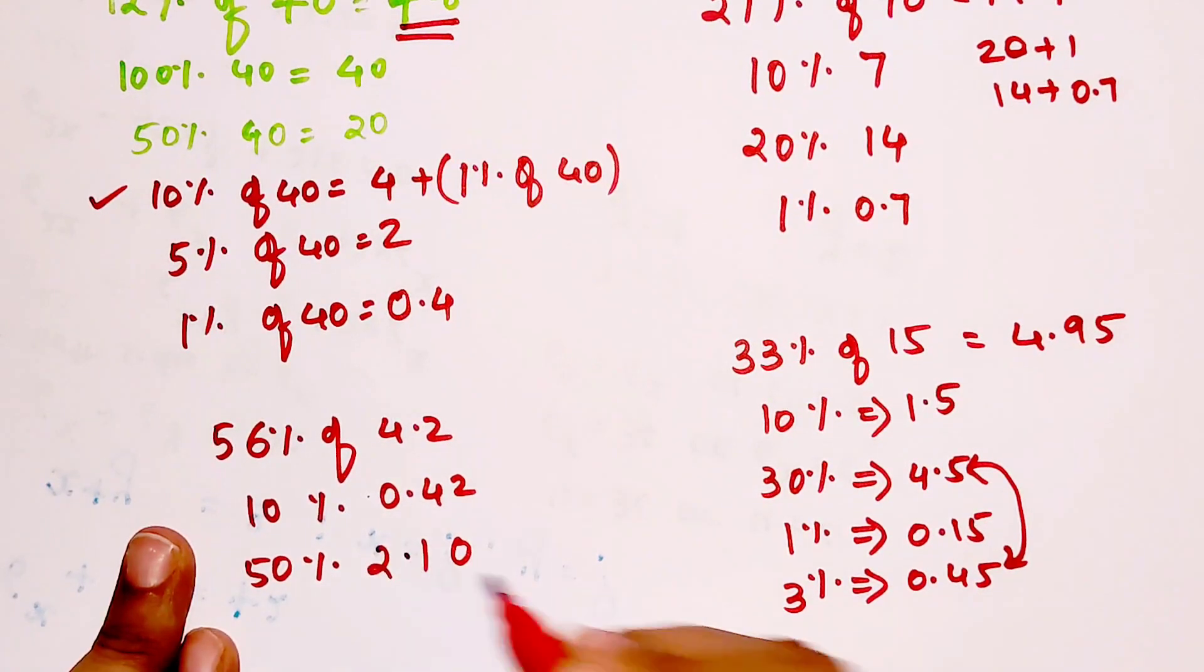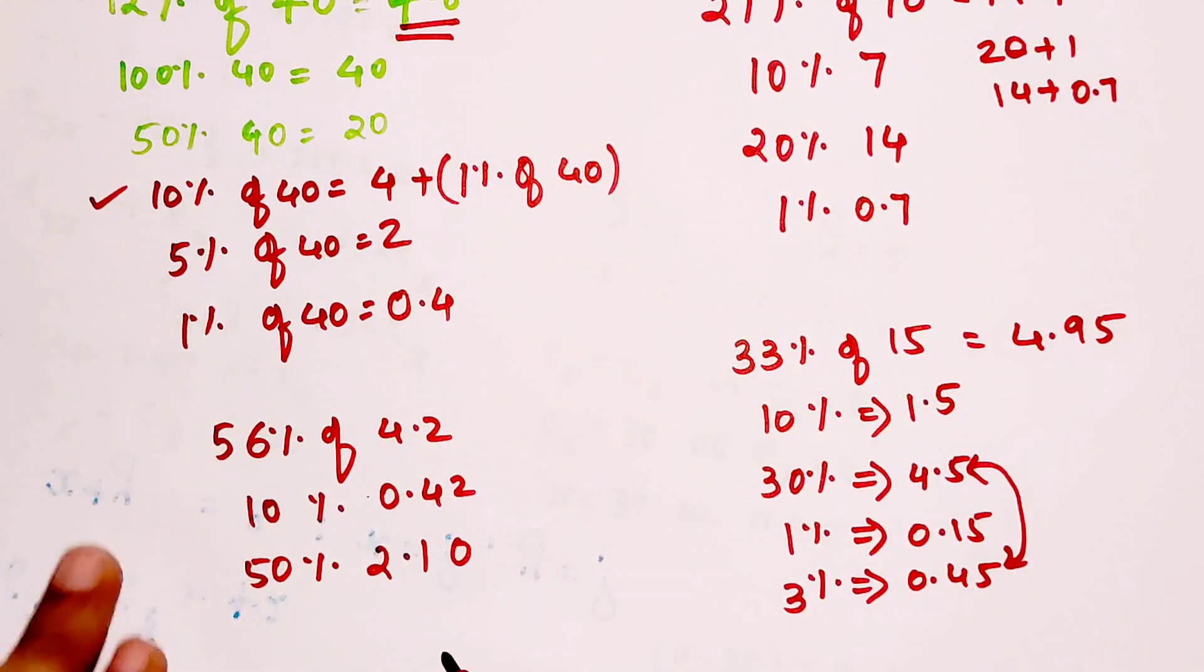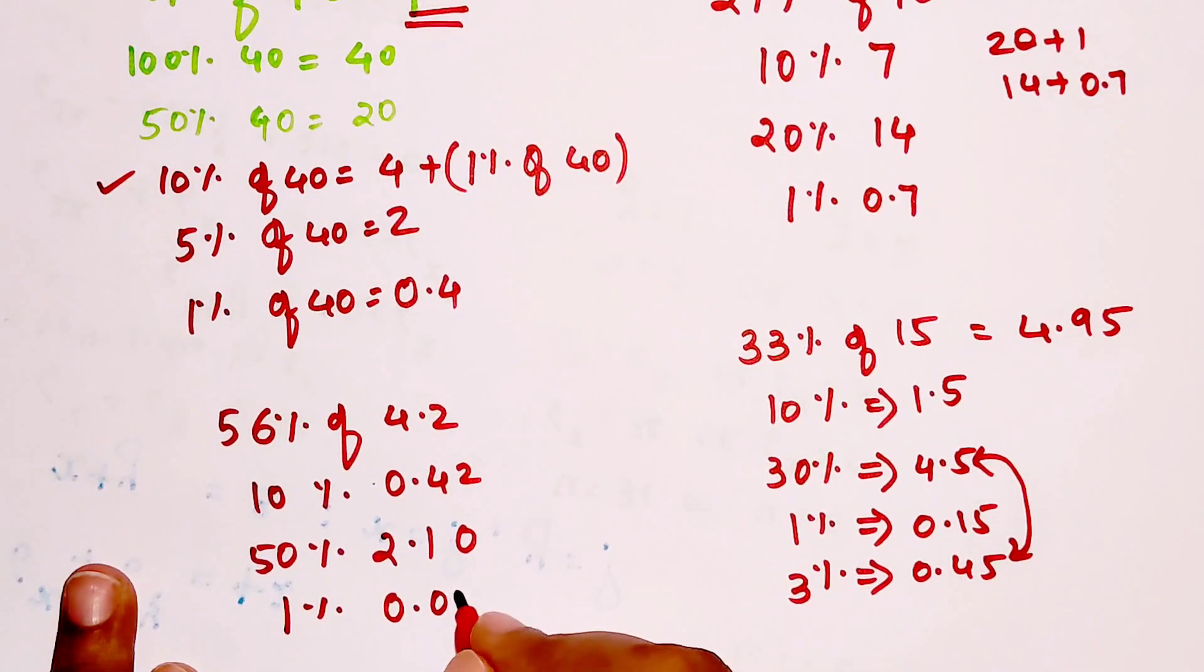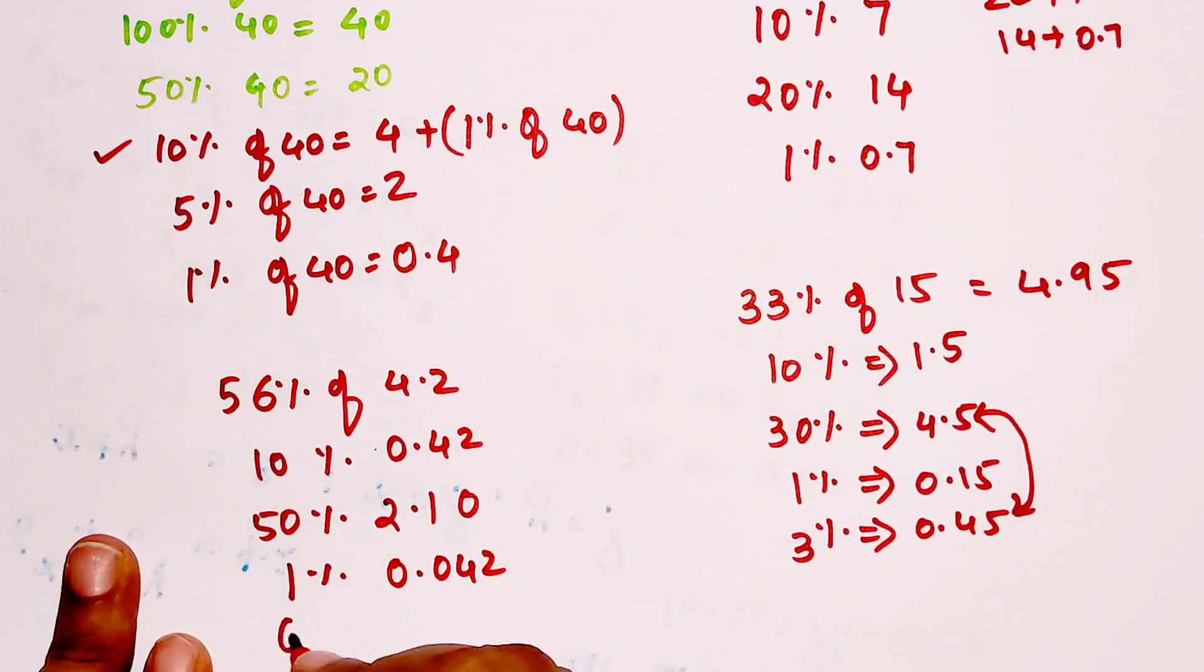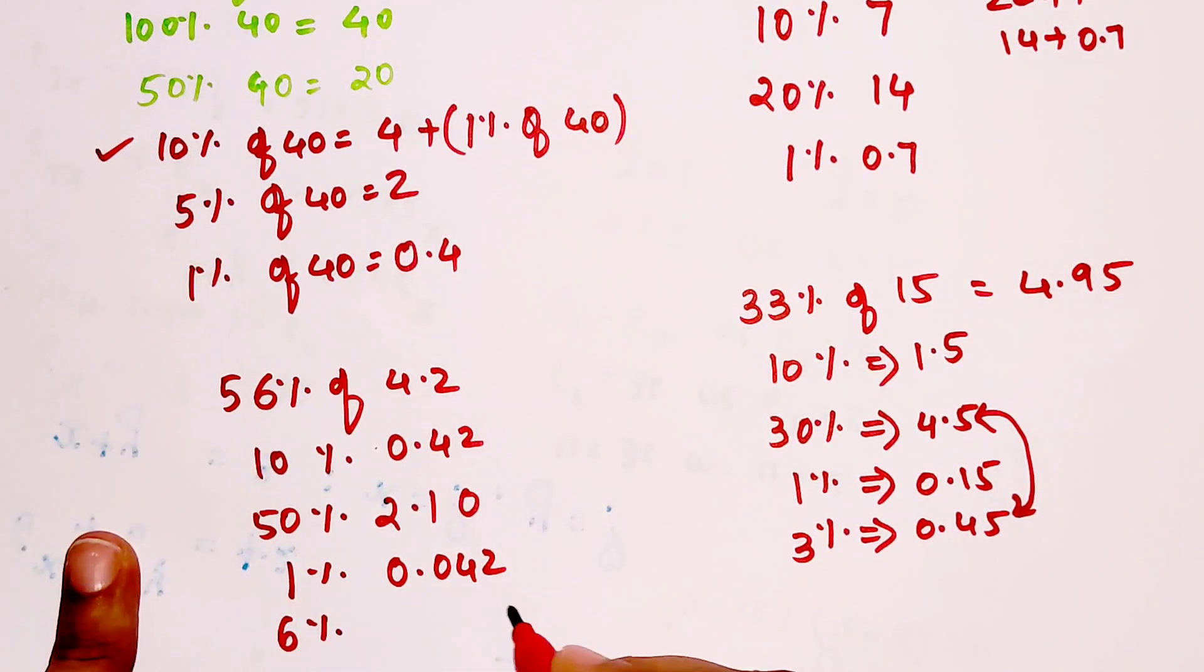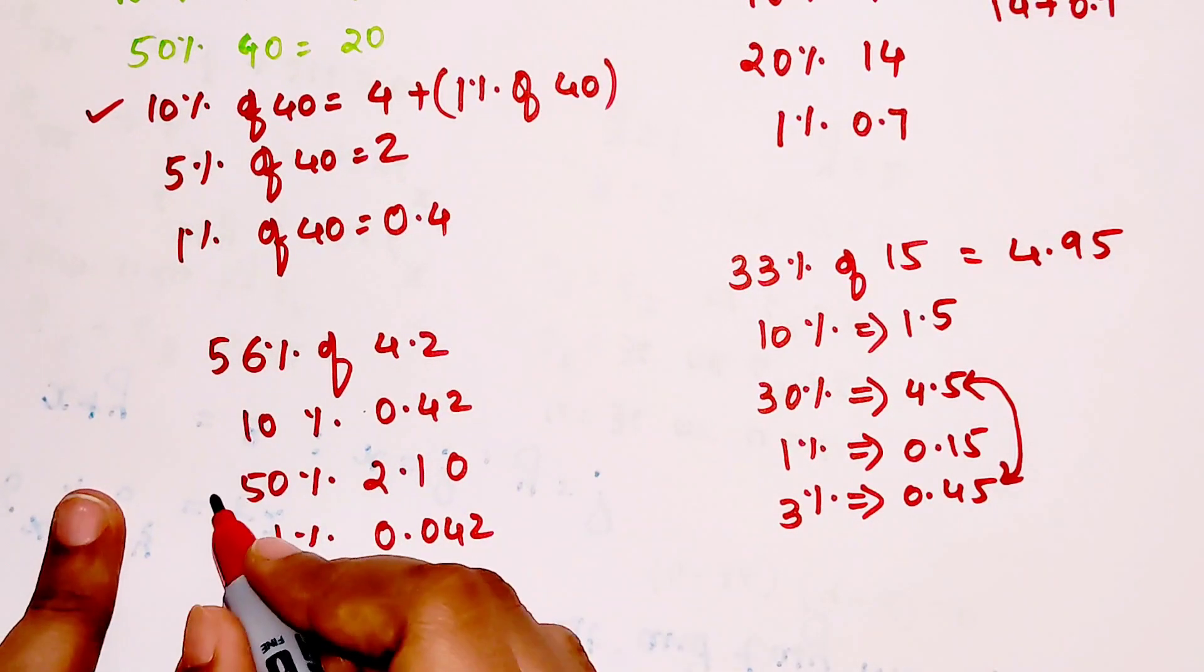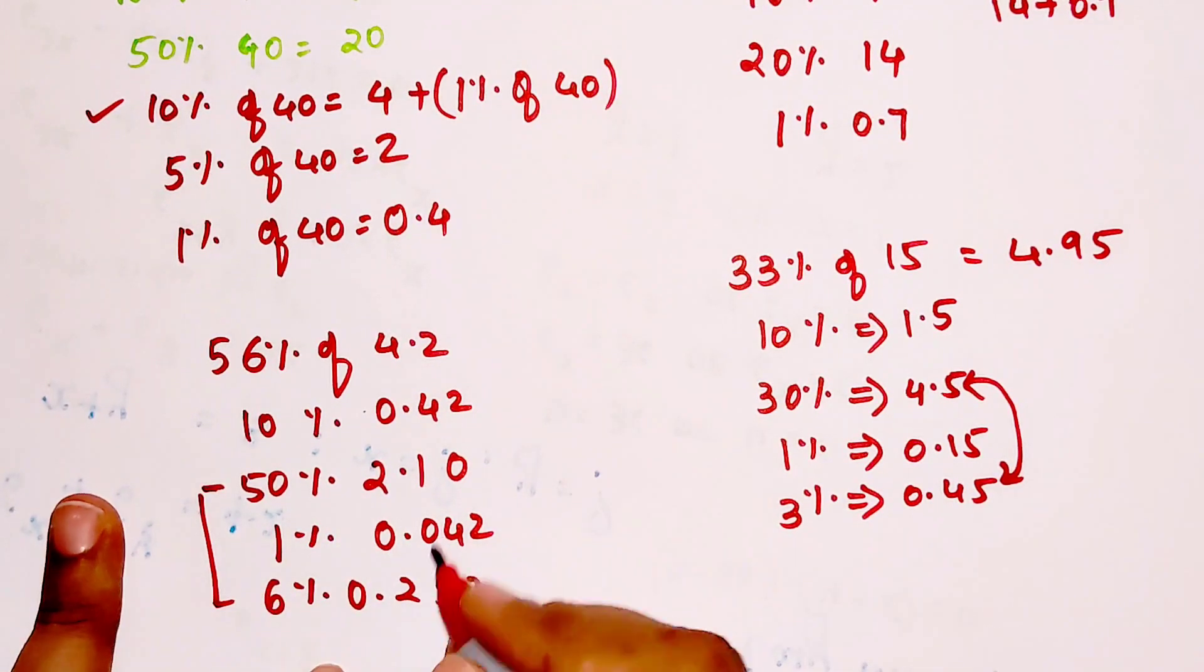So 50% will be what? Multiplying both sides by 5, we get 2.1. So then we have 6%. Please understand 1% will be 0.042, correct. So 6% is just multiplying both sides by 6, so here we get 0.252.